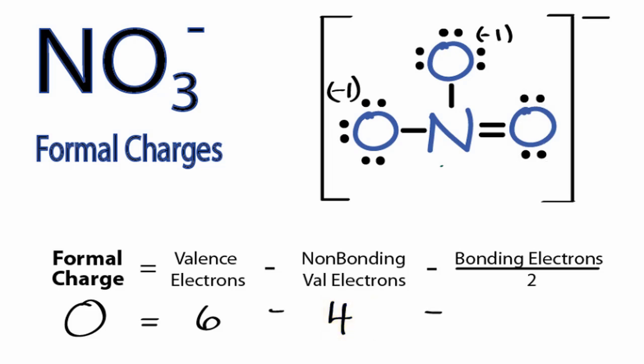And then bonding, we have a double bond. So we have 2, 4, 4 valence electrons in that double bond. We'll divide it by 2. So 6 minus 4 minus 2 gives us a formal charge of 0 for this oxygen right here.